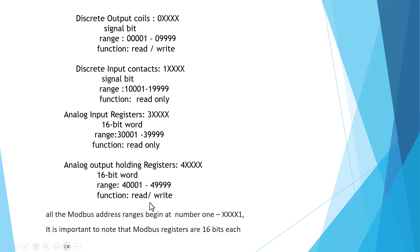To summarize: all Modbus address ranges begin at number one — the first address is always one. These are all absolute addresses. The ranges are 00001–09999, 10001–19999, 30001–39999, and 40001–49999. All Modbus blocks use 16 bits, but in discrete output and discrete input only one bit is used, and the other 15 bits are wasted. Only the input and holding registers use the full 16-bit word.